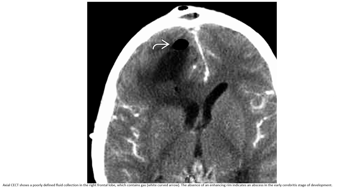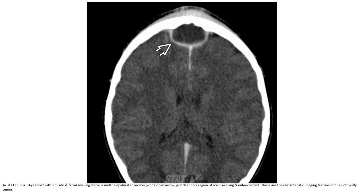This is the contrast-enhanced CT showing a well-defined fluid collection in the right frontal lobe, which contains gas. The absence of an enhancing ring indicates an abscess in the early cerebritis stage of development. Another contrast-enhanced CT in a 10-year-old with sinusitis and facial swelling shows a midline epidural collection, with enhancement — these are characteristic imaging features of Pott's puffy tumor.